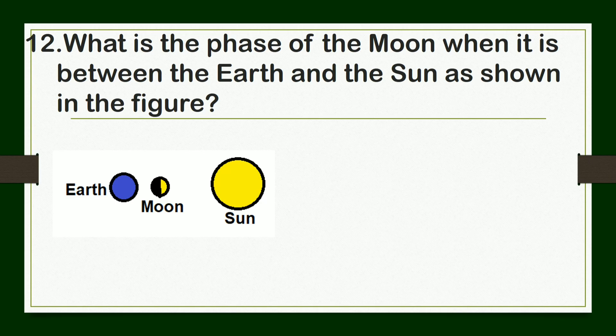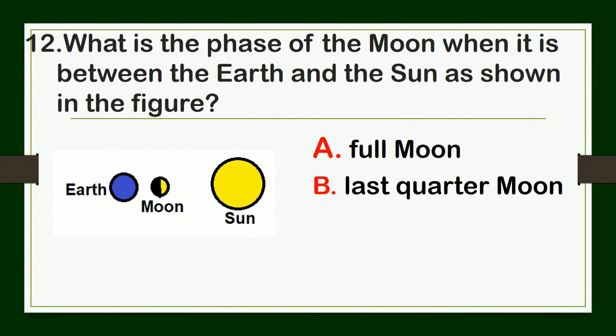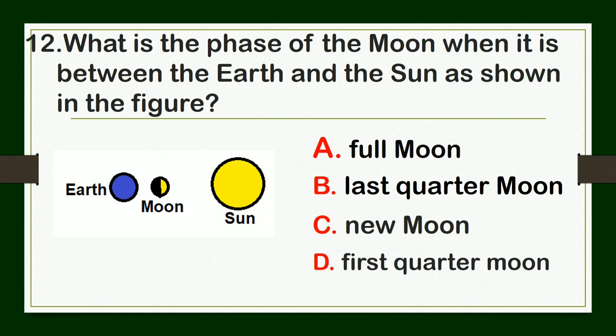What is the phase of the moon when it is between the Earth and the Sun, as shown in the figure? A. full moon, B. last quarter moon, C. new moon, or D. first quarter moon.